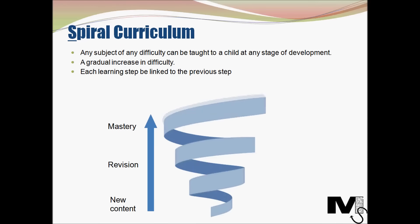Brunner believed that any subject of any difficulty can be taught to a child at any stage of development. This is in contrast to Piaget's stages, which advocate that curriculum should be designed in accordance with the stage of development of a child. Brunner stated that any subject can be taught at any stage with a gradual increase in difficulty, meaning students revisit the same topic at regular intervals with complexity increasing each time, and each learning step is linked to the previous stage.